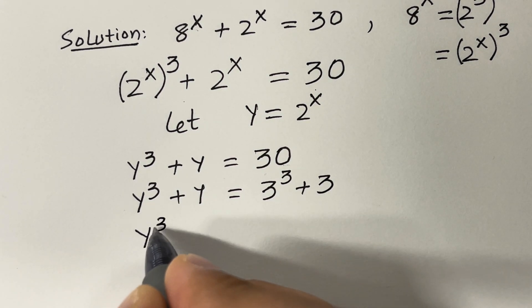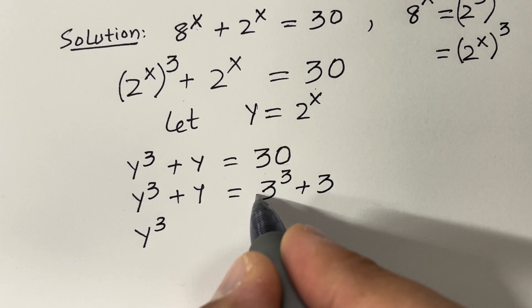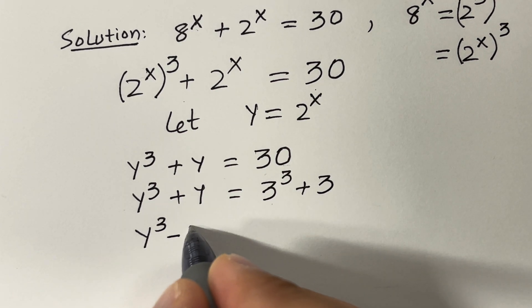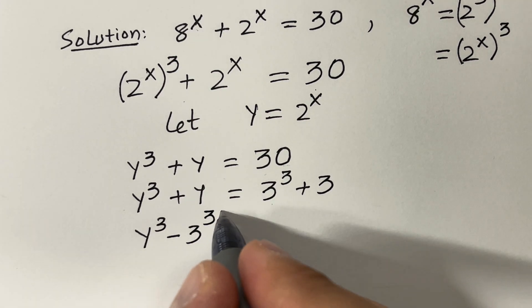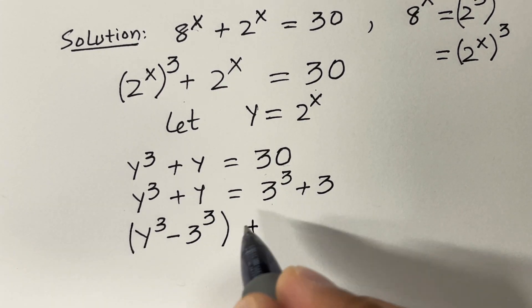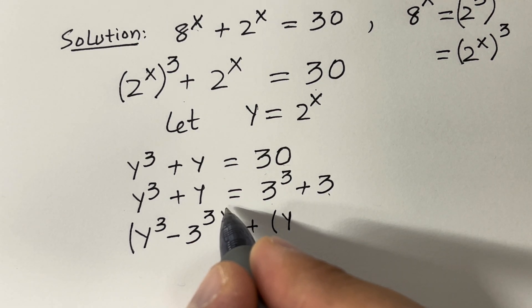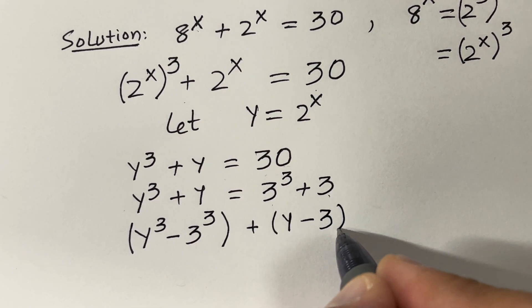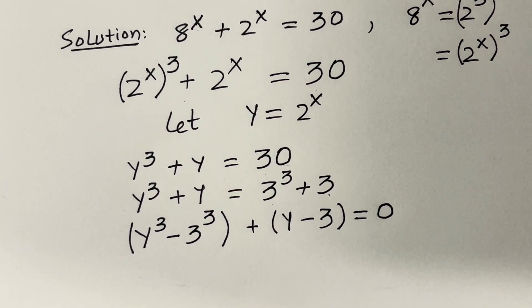Let's move the right-hand side terms over: moving 3 cubed gives negative 3 cubed, and moving 3 to the left side gives negative 3, so we have y cubed minus 3 cubed plus y minus 3 equals 0.